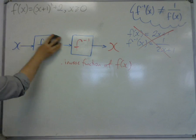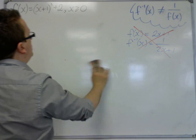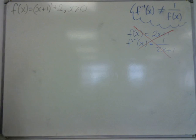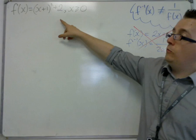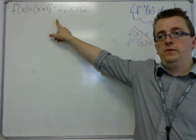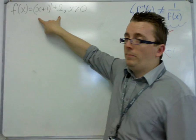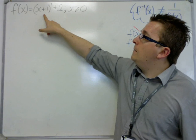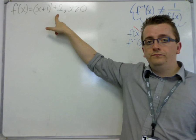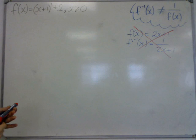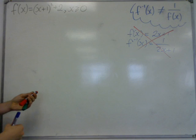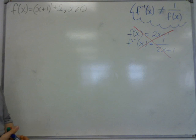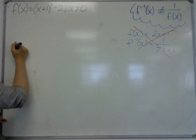So we have this inverse function notation. And let's say we want to find the inverse function of this. f of x is x plus 1 all squared plus 2. Now you should be able to recognize that that is a parabola. It's a parabola that has a vertex at minus 1, 2. So first of all, let's say we want to find the inverse function. We want to find f to the minus 1 of x.